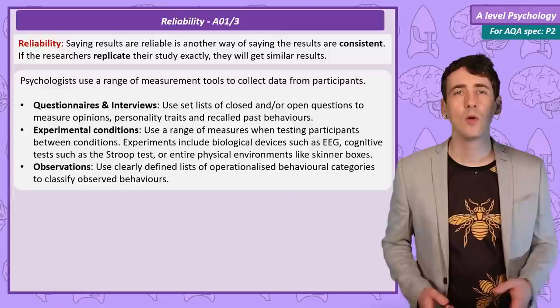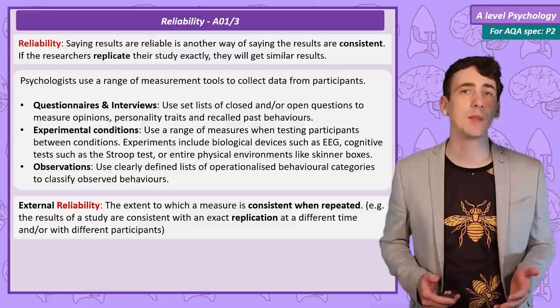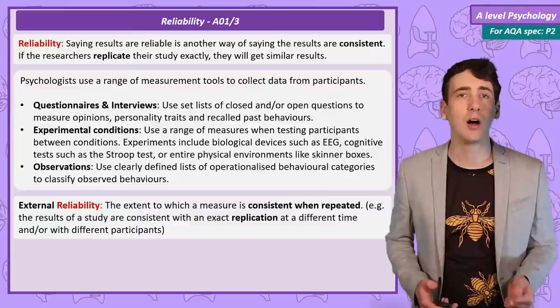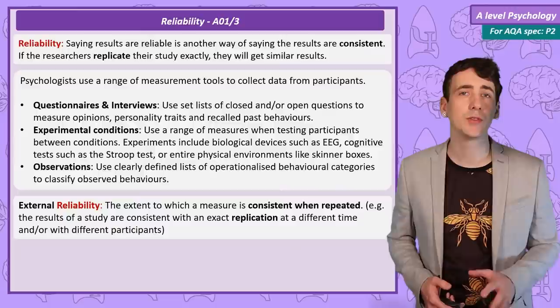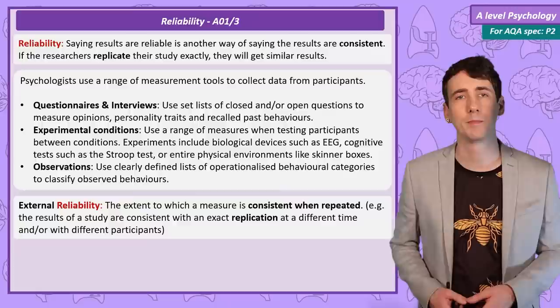We can separate reliability into two types. Really what we have been talking about so far is external reliability. This is when the measure we use is repeated another time. If the results the same or another researcher gets the second time are consistent with the first results, the study has external reliability. If the results of this exact replication are significantly different, then there is an issue with external reliability.